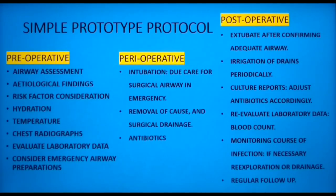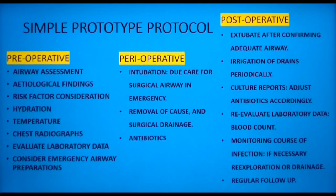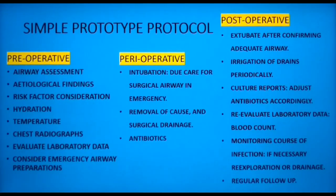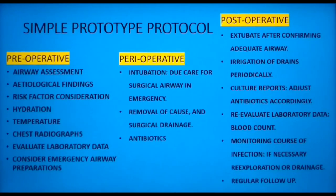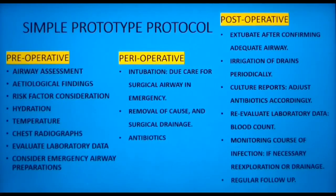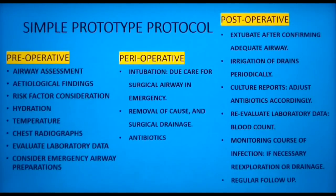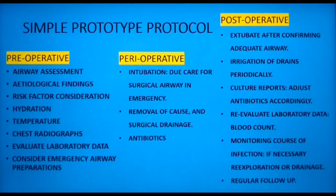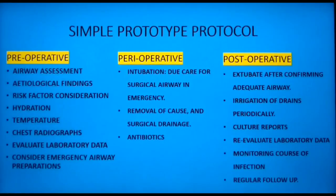Confirm etiological findings using an OPG or CT scan of the head and neck. Consider risk factors like diabetes and immunodeficiency. Check hydration by monitoring BP, pulse, and urine output. Assess temperature, blood and urine cultures for septicemia. Apply cold packs and use antipyretics as required. Obtain chest radiographs to rule out pneumonia. Evaluate lab data for blood count and protein levels, and consider emergency airway preparations. The peri-operative protocol includes intubation, removal of the cause, surgical drainage, and appropriate antibiotics.